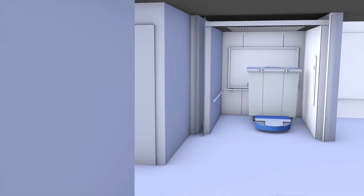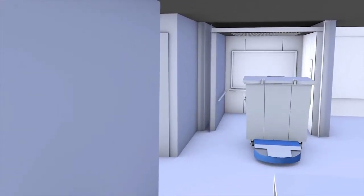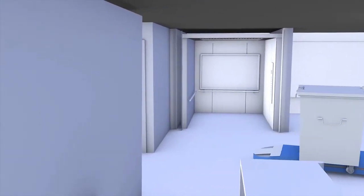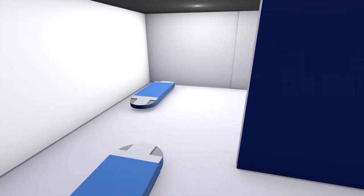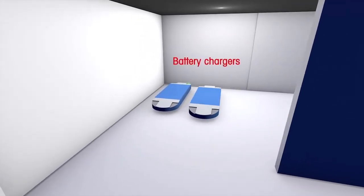They also transport patient equipment, waste, linens, and medication. An automated vehicle needs space to move through corridors, room for elevator interface and charging, and space for cart pickup and delivery.